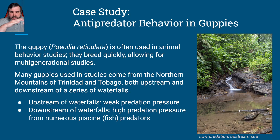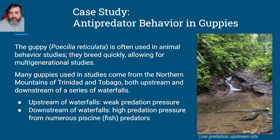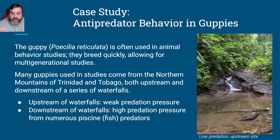The guppy — Poecilia reticulata — is often used in animal behavior studies. They breed quickly, which allows lots of generational studies. You really want things that breed very quickly; that's why flies and mice are used so often. A lot of guppies used in the studies come from the northern mountains of Trinidad and Tobago, both upstream and downstream of a series of waterfalls.